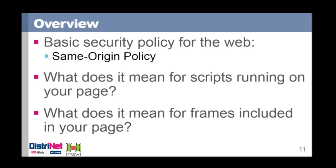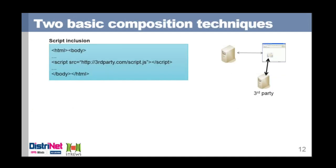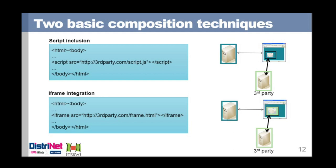A small introduction: the basic security policy for the web is the same-origin policy. I won't redefine it, but I want to look at its impact on integrating content via scripts or iframes. If you use scripts from remote third parties, from the browser's security point of view there's no difference — it executes in your security context. Whereas with frames, the integrated frame has its own security context — the origin where the iframe came from — creating a strict boundary between the outer and inner frames, with selective communication between those two security contexts.